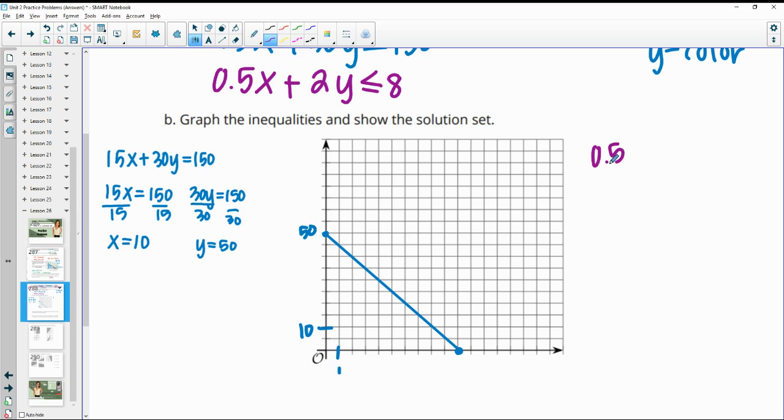So then in this constraint, if she only does haircuts in her 8 hours, so we would divide by 0.5. So 0.5 goes into 8 16 times. So if she only did haircuts in her work day, she would do 16 of them. So remember, this was 10, 11, 12, 13, 14, 15, 16 haircuts.